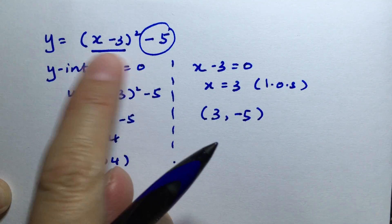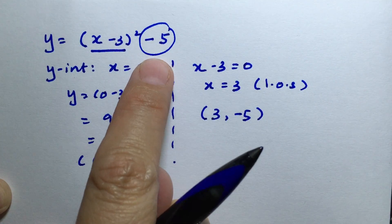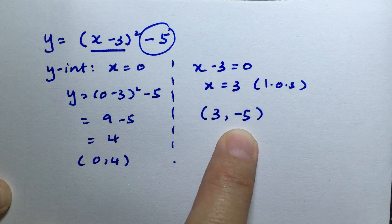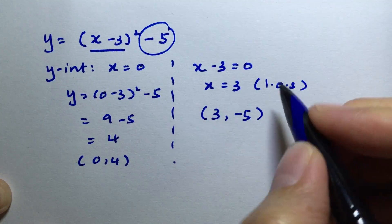This means we have a quadratic graph translated down by 5 units, so -5 is the lowest point it can go. This is the turning point.